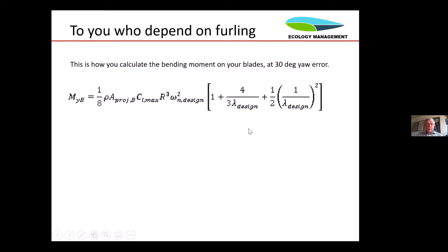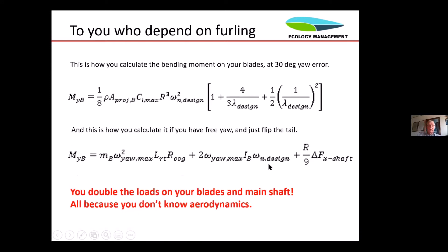There's one issue you need to be very careful about. Some turbines use furling the rotor — putting it out of yaw so it doesn't stand perpendicular to the wind direction — in order to reduce power output. If it's 30 degrees out of yaw, you simply double the loads on your main shaft. You do that because you don't know enough about aerodynamics to reduce the power directly on the airfoil instead. You should kill it at the source — it's a lot better.